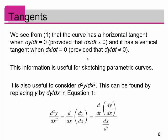It's also useful to consider the second derivative — that's for finding things like concavity. This can be found by replacing y with dy/dx in the first derivative equation. The second derivative equals the derivative with respect to t of dy/dx, divided by dx/dt. So you take the derivative of the first derivative and then divide that by dx/dt, always, to find the second derivative. Keep this equation handy.